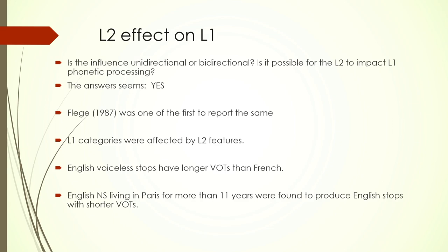Now we will look at L2 effect on L1. So far we have looked at major domains of L1 to L2 transfer in phonological properties. The transfer can also happen the other way around. If L1 is the stronger or dominant language, chances are very high of seeing L1 to L2 transfer. However, if L2 becomes more dominant and stronger, the opposite direction of influence is also possible. One of the first studies to report on this opposite traffic was Flege in 1987. They found that L1 categories were affected by L2 features. English voiceless stops have a longer VOT than French. They looked at English native speakers living in Paris for more than 11 years and found they produced English stops with shorter VOTs, because their French had likely become dominant.